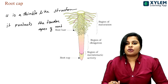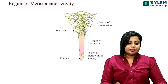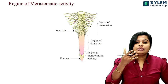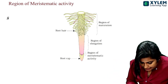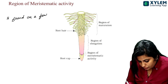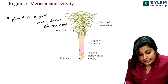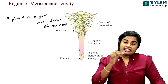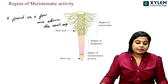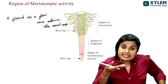We use the root cap, then we move to the region of meristematic activity. The region of meristematic activity is found a few millimeters above the root cap.